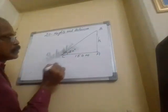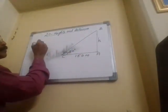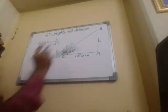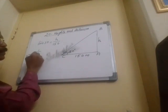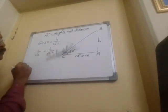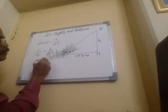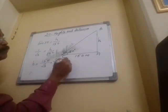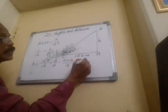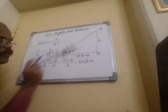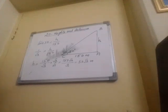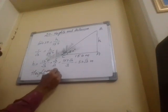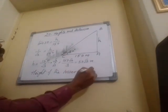We consider tan 30. Tan 30 equals perpendicular by base, so tan 30 equals h by 150. Since tan 30 is 1 by root 3, we get 1 by root 3 equals h by 150. By cross multiplication, h equals 150 by root 3, which simplifies to 150 root 3 by 3, giving 50 root 3 meters. Substituting the value of root 3 and multiplying by 50 gives the exact answer. The conclusion: height of the tower is 50 root 3 meters.